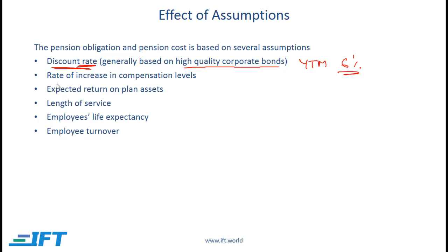Another important assumption is the rate of increase in compensation levels. Typically pension benefits are based on the final salary of an employee. So if it is estimated that an employee has another 10 years of service left, then the estimate of how much he or she will be earning at the end of 10 years is based on an assumption about the increase in salary.